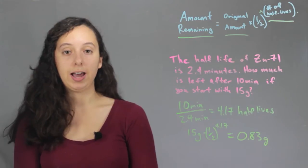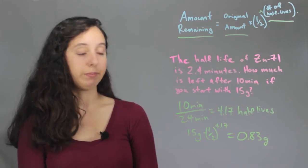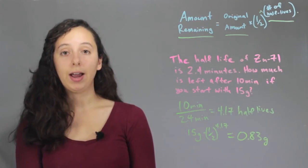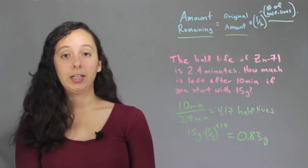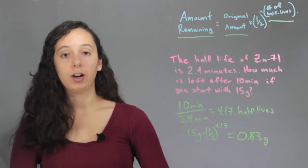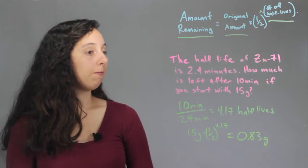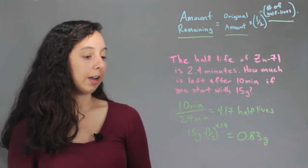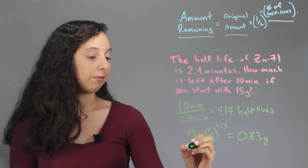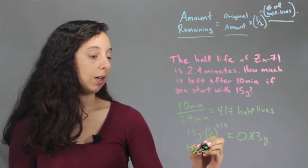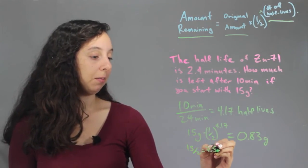Alright, so let's just go ahead and double check our work to make sure this makes sense. So remember, a half-life is how long it takes for half of that material to decompose. So if we knew that we started with 15 grams, after one half-life, we'll have 7.5 grams left.